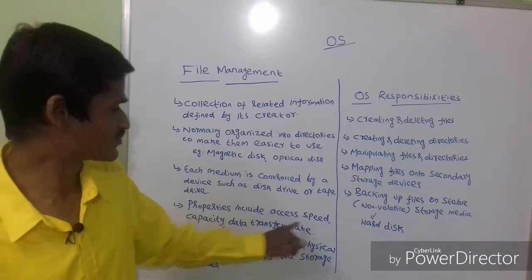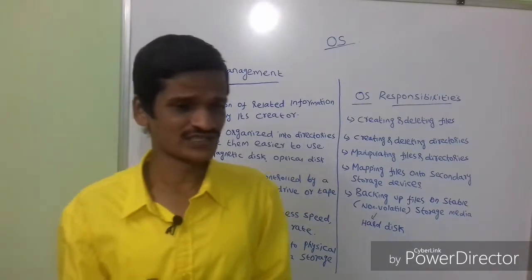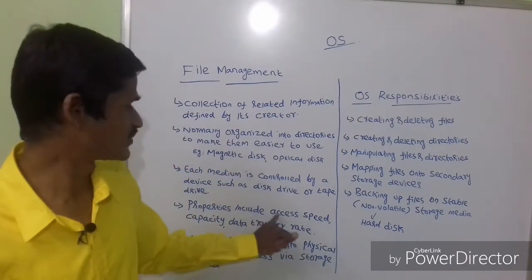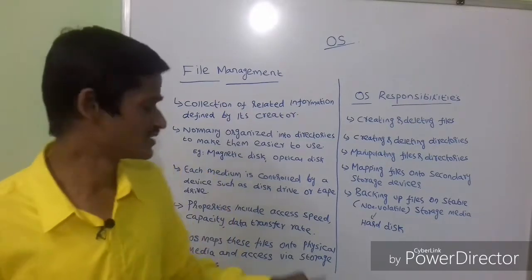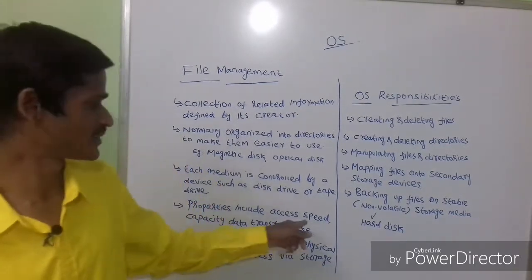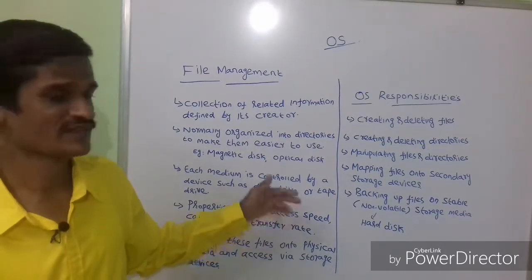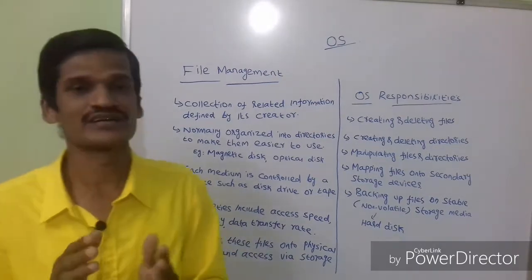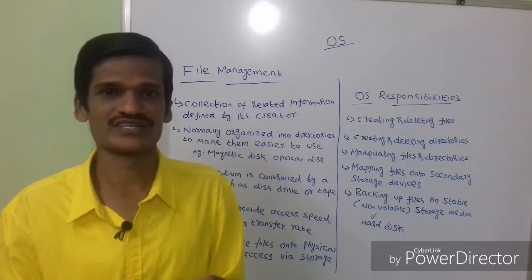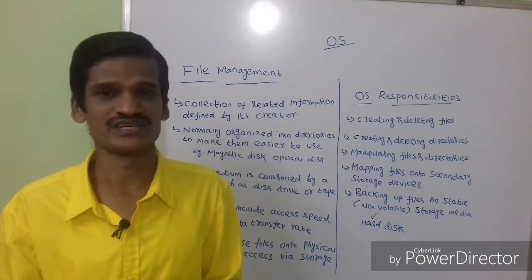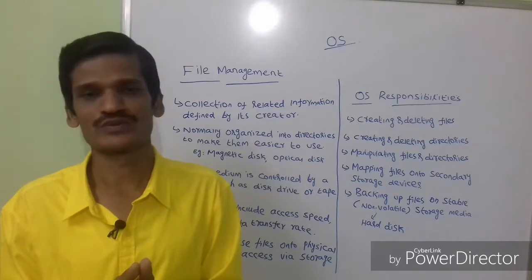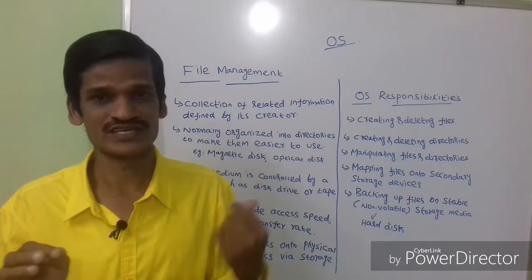File properties include access speed, capacity, and data transfer rate. If you want to retrieve any file, each file has its own properties. For example, access speed tells how quickly the data can be retrieved. Capacity tells how much space that file occupies — it may be 1 MB or 2 MB. Data transfer rate may be in kbps. So all those properties are considered when accessing a file.